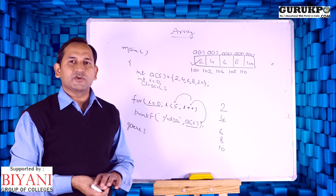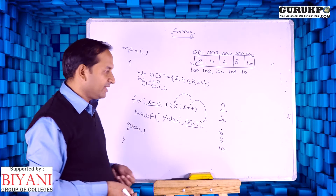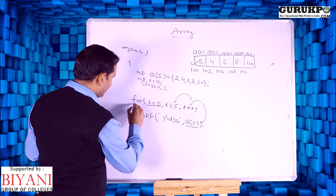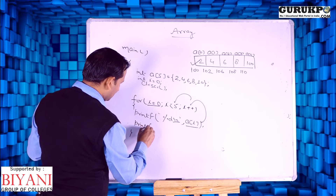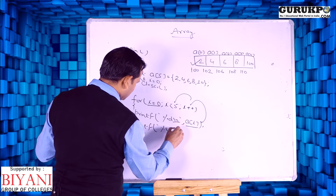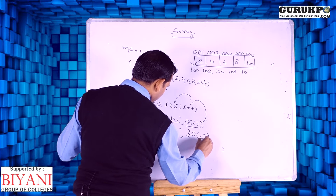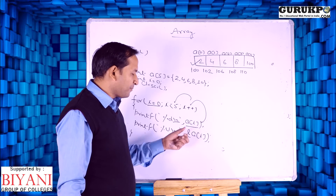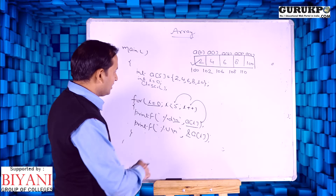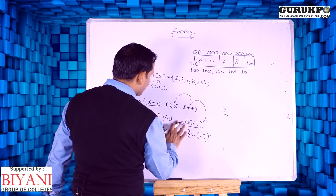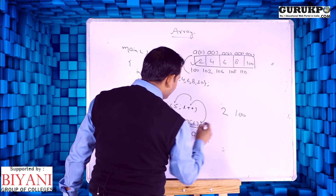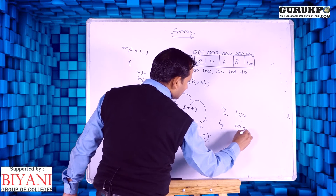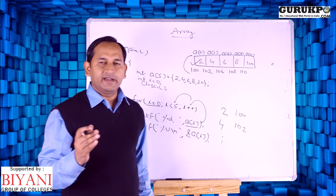Suppose we want to check the address of array elements; we can do so using a program. We can print the address using format specifier %u and the & operator. The & operator always gives the address of the corresponding value. So for a[0], the value is 2 and the address is 100. Similarly, when i increments to 1, a[1] gives value 4 and the corresponding address of a[1] is 102. So we can easily print values and their corresponding addresses.